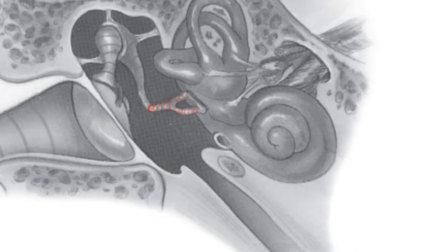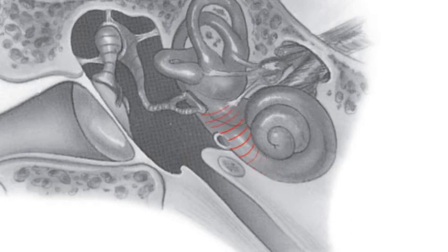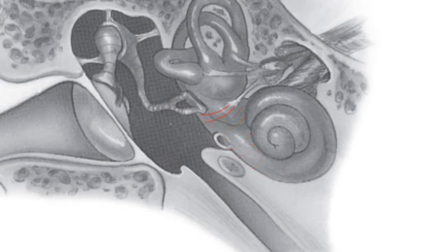Similar to the action of a plunger, the footplate of the stapes moves in and out of the oval window, causing the fluid of the inner ear to move back and forth in the motion of a wave.